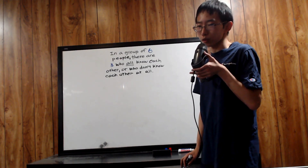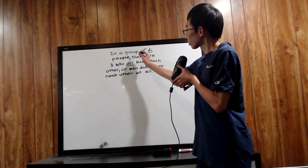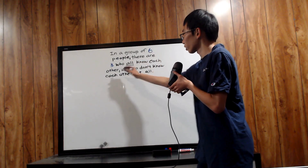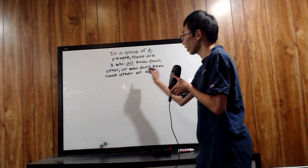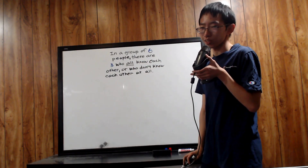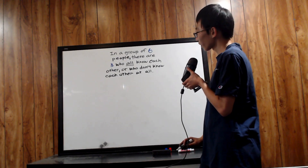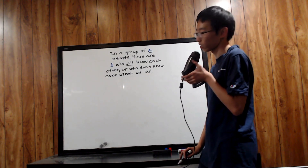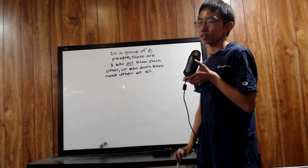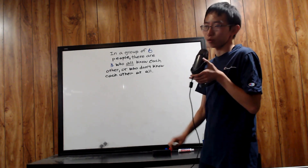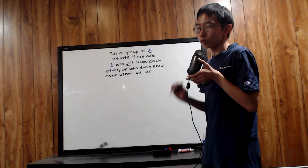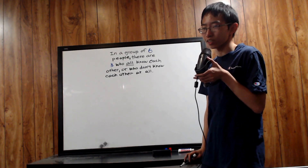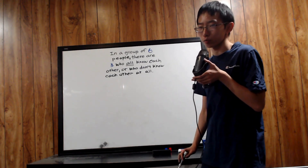The next time you invite six people to your party, say to them: in a group of six people, among you, there are three who all know each other or who don't know each other at all. Wouldn't that be a cool party trick? Also, you cannot guarantee this with five people, but six people is enough to guarantee this. This is a pretty popular and cool introductory problem in graph theory.